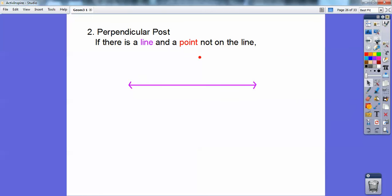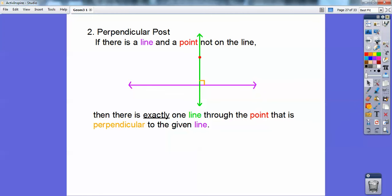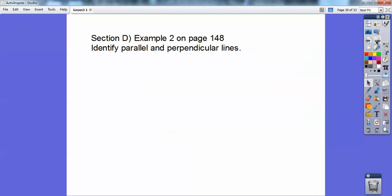And this perpendicular postulate says this except perpendicular. If there's a line and a point that's not on the line, there's one line that goes through that point that makes it perpendicular to the purple line right there.